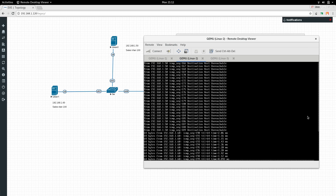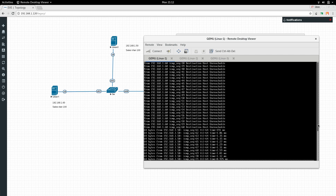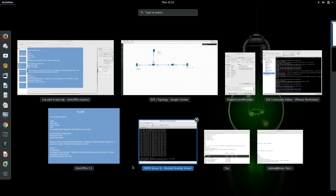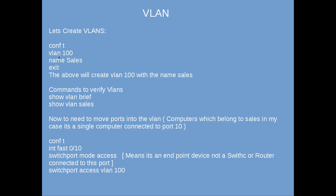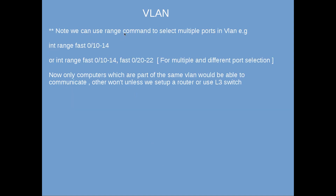We have successfully created VLANs. One important note: you can select multiple ports using the 'range' command. For example, 'interface range FastEthernet 0/10 to 14' or 'Ethernet 0/1 to 2' depending on your switch configuration. Only computers which are part of the same VLAN will be able to communicate; others won't unless we set up a router or use a Layer 3 switch.